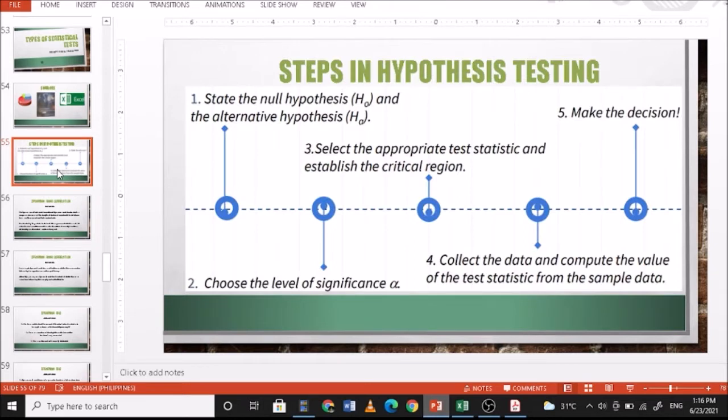For steps in hypothesis testing: number one, state the null hypothesis and alternative hypothesis. Number two, choose the level of significance. Number three, select the appropriate test statistic and establish the critical region. Number four, collect the data and compute the value of the test statistic from the sample data. And number five, make the decision.